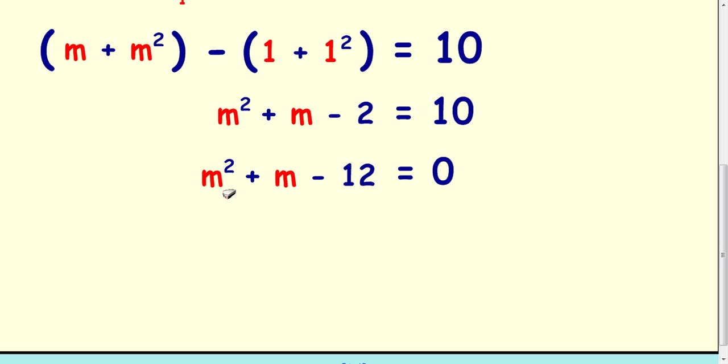Factorize into double brackets. This is a trinomial. So we're looking for factors of 12 that can give us a 1 in the middle. So the factors of 12 are 6 and 2, 12 and 1, and 3 and 4. The 3 and the 4 will give us the 1 in the middle.